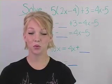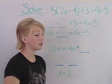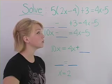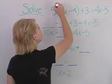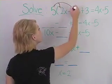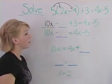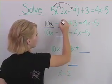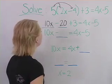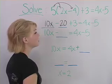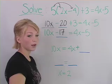Here we're going to use the distributive property and combine like terms to solve the equation 5 times the quantity 2x minus 4, plus 3, equals 4x minus 5. Our first step is to use the distributive property: 5 times 2x equals 10x, and 5 times negative 4 gives us negative 20. Plus 3 equals 4x minus 5. Now combining like terms gives us 10x minus 17 equals 4x minus 5.